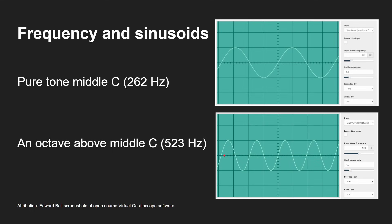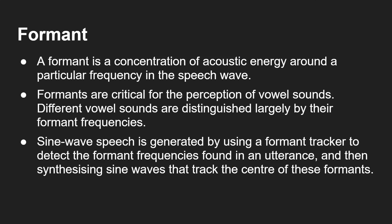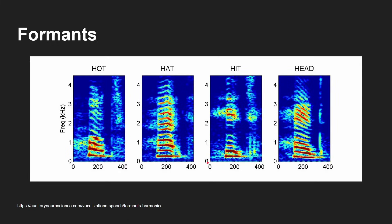Higher frequency translates to higher tones — middle C or one octave above middle C, that's how sound works to our ears. Now there's a thing called a formant. I'm not a speech therapist or expert, but a formant is a concentration of acoustic energy around a particular frequency in the speech wave — it's how we perceive a vowel sound. Different vowel sounds are distinguished largely by their formant frequencies. Sine wave speech is generated by using a formant tracker to detect the formant frequencies in an utterance and then synthesizing sine waves that track the center of those formants. Looking at a picture of different vowels — hot, hat, hit, head — you can see the formants are very clearly different, and that's how we distinguish between them.